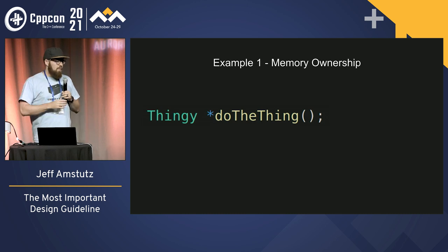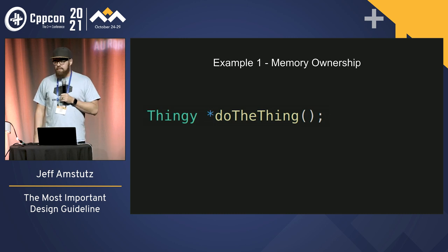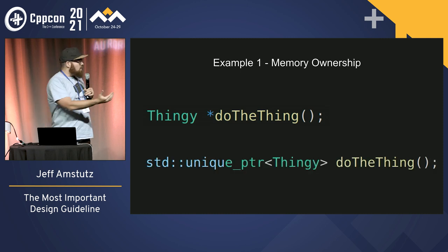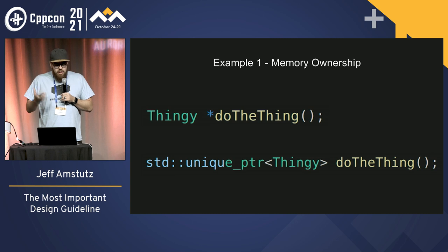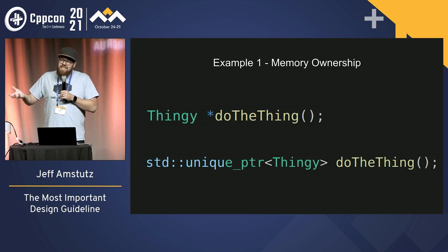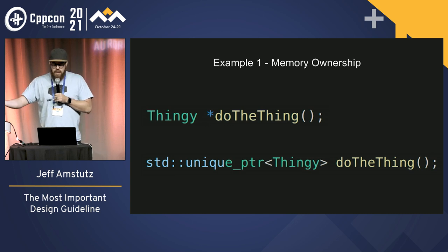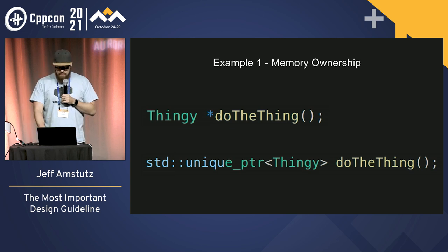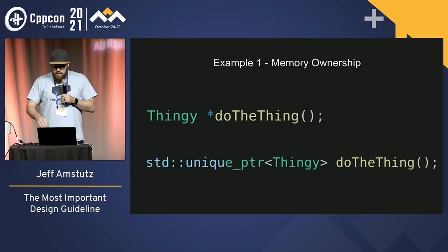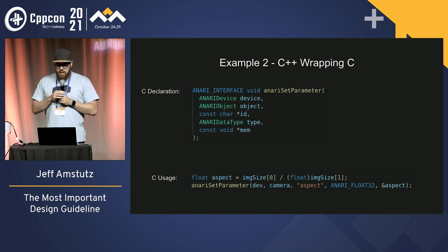The first example is very straightforward: memory ownership. Now this is a trick question — is this a good interface? The answer is we don't know because we don't have anything to compare it against. But maybe the bottom interface is better because calling the function is just as easy in both designs, but it's more difficult to do the wrong thing in the lower interface, because you're returning something that expresses the memory ownership about that memory being pointed to by the return value of this function. Very straightforward, very simple, very small. I want to show a more real, tangible example in an API that I've been working with for a while.